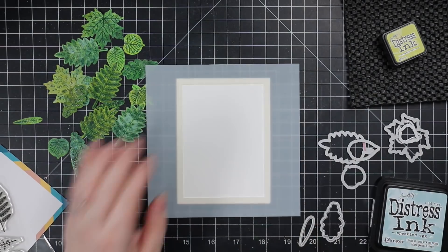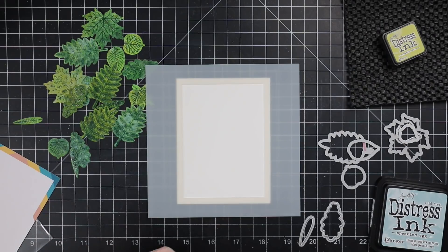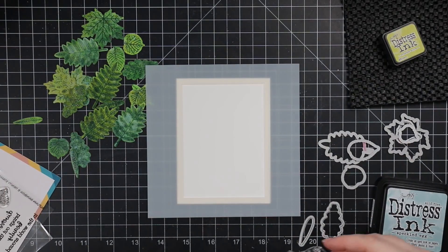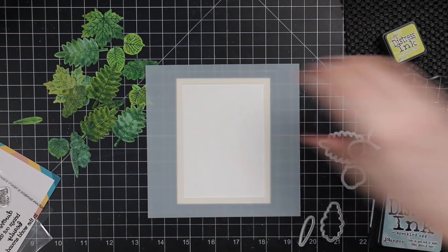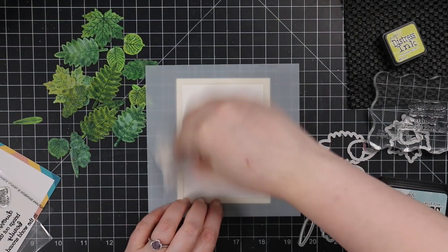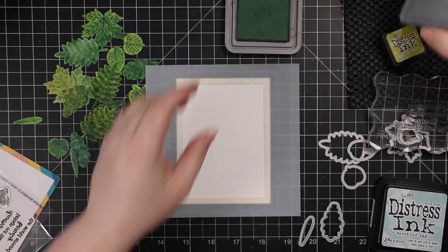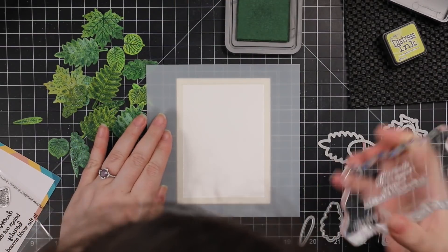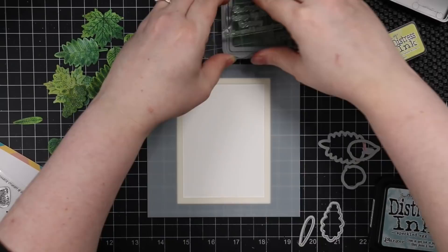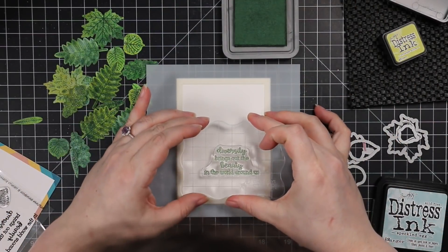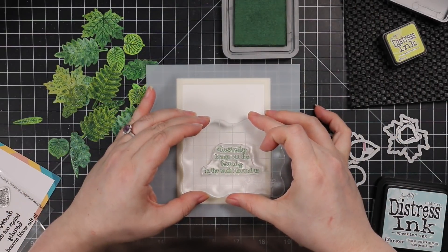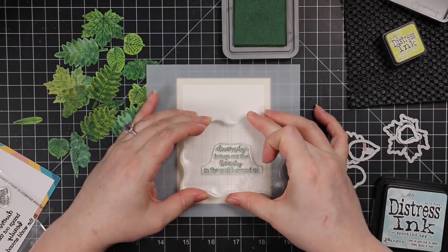So I did that. And then I also am going to use the A2 foundations rectangle stencil set. This set has four stencils in various sizes of rectangles. And then it also includes the rectangle. So you can use them either as a stencil or a mask, depending on what you're doing. And there's different shapes now available. I use the heart ones back in January, whenever. And I like them.